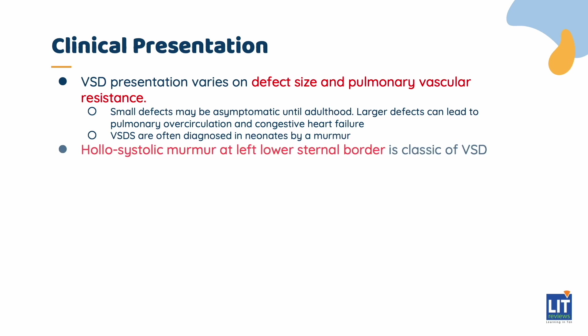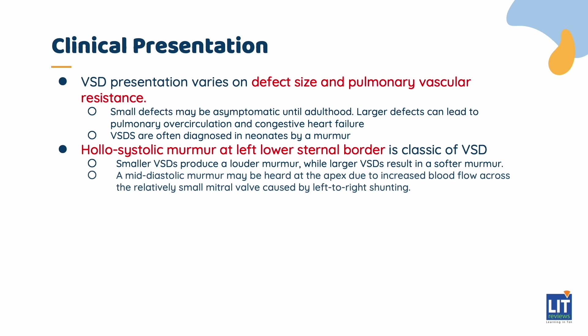On examination, a holosystolic murmur at the left lower sternal border is classic of VSD. Smaller VSDs are associated with a louder murmur compared to larger VSDs which produce a softer murmur. Additionally, a mid-diastolic murmur may be heard at the apex due to increased volume of blood flowing across a relatively small mitral valve, caused by the left-to-right shunting. As pulmonary arterial pressures begin to increase, a loud P2 and narrow splitting of S2 may be present. Bibasal crepitations and hepatomegaly may also be observed due to fluid over-circulation.